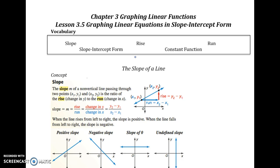But to do that, we need to know what slope is. Slope is basically the ratio of the rise to the run — it's how steep a graph is. The rise is going to be your change in Y, which is Y2 minus Y1, and the run is going to be the change in X, which is X2 minus X1. You can use any two points of a non-vertical line to find slope.